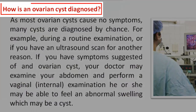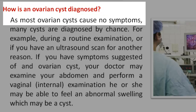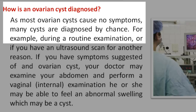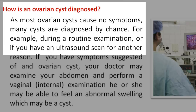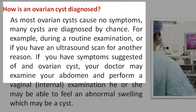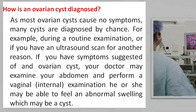Reading 2: How is an ovarian cyst diagnosed? As most ovarian cysts cause no symptoms, many cysts are diagnosed by chance — for example, during a routine examination or if you have an ultrasound scan for another reason. If you have symptoms suggestive of an ovarian cyst, your doctor may examine your abdomen and perform a vaginal internal examination. He or she may be able to feel an abnormal swelling, which may be a cyst.